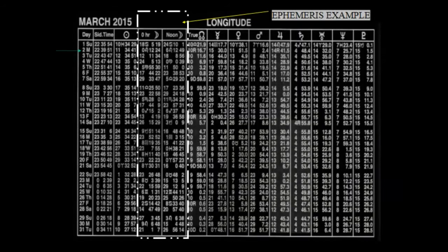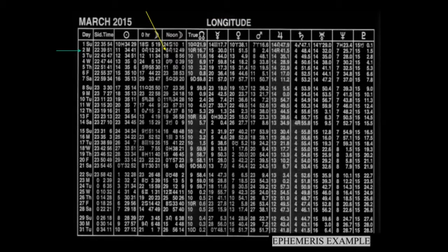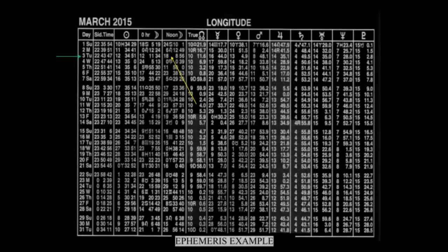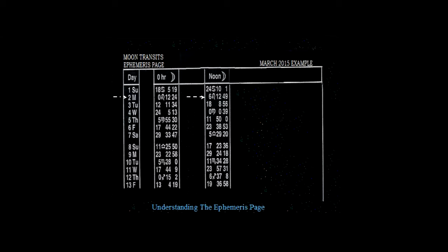On screen now is the moon transit ephemeris page. We go to March 2nd on a Monday and we see the comparisons between the noon moon which is 6 degrees Leo and the next moon, which is on March 3rd on Tuesday, at 18 degrees Leo. If you look at the sign you'll see that both signs are Leo. So the difference between 6 degrees Leo and 18 degrees Leo is 12 degrees, and Leo is a fire sign.